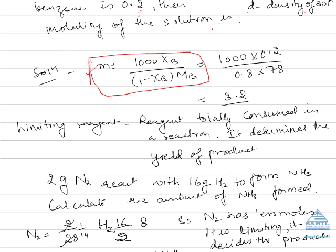So now we can use the direct formula: m equals 1000 times xi_b over 1 minus xi_b times Mb. That's 1000 times 0.2 over 0.8 times 78. That comes out to be 3.2. Now the next term in mole concept is the limiting reagent.